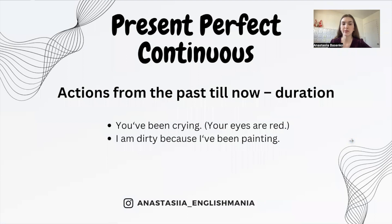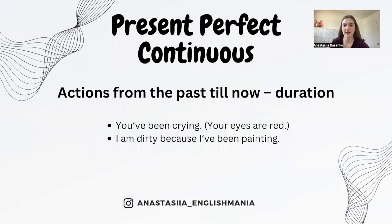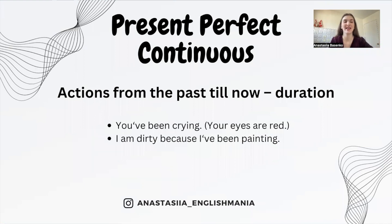We use present perfect continuous for actions from the past until now — we emphasize the duration. We use it with action verbs, also called dynamic verbs, to talk about situations that have not finished or have just finished. There is often a present result from doing these actions. For example, 'you've been crying' — we can see your eyes are red. Or 'I'm dirty because I've been painting' — we see the result.